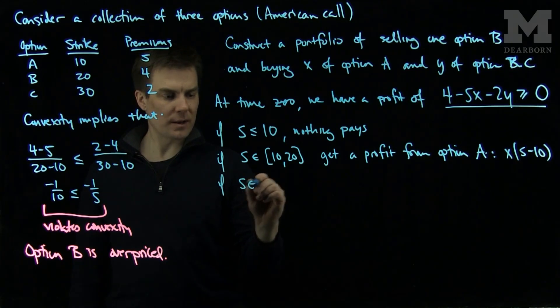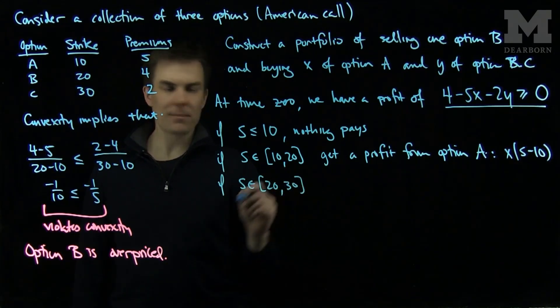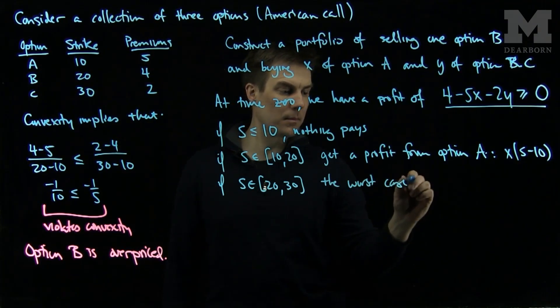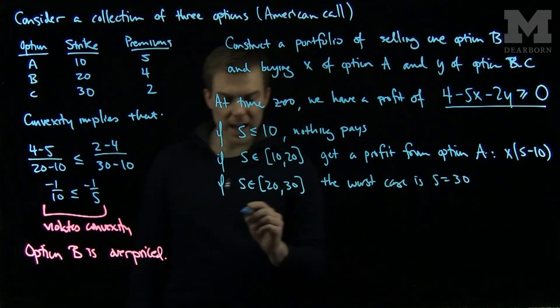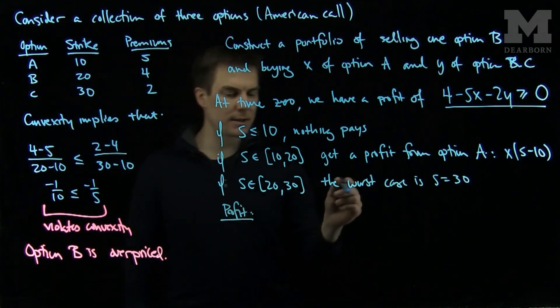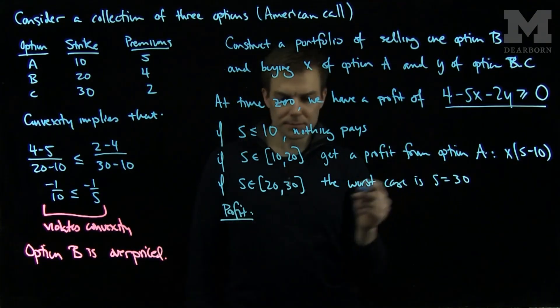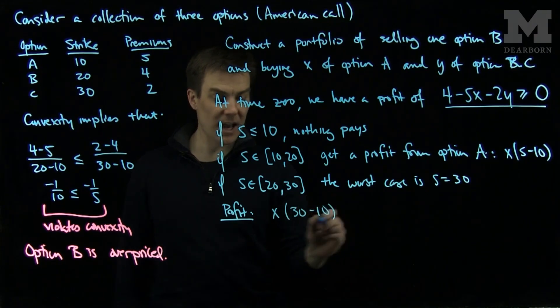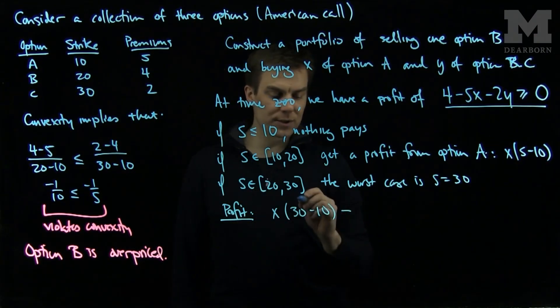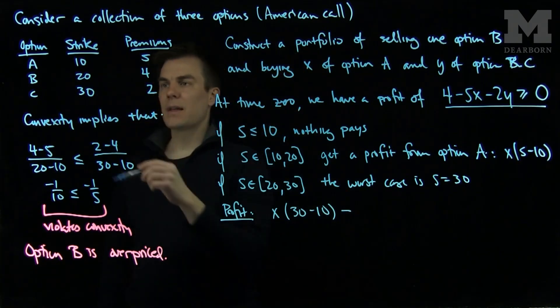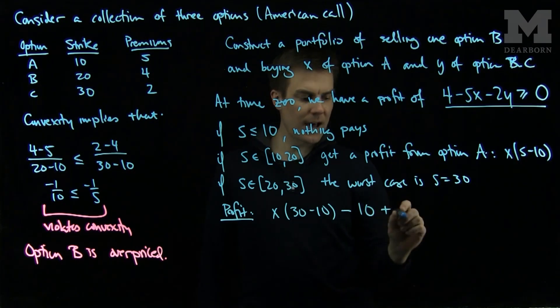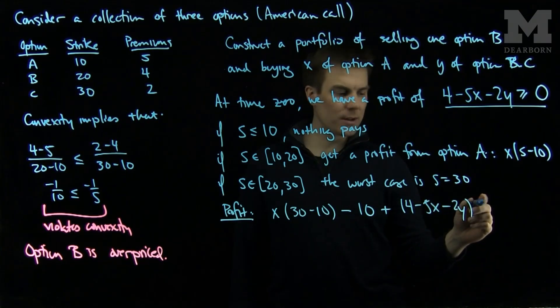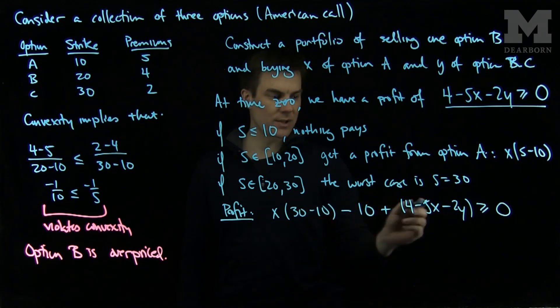If S is between 20 and 30, the absolute worst case scenario is if S equals 30. And what we'll need to construct an arbitrage is our profit in this situation is going to be x times 30 minus 10, that's the profit we get from call option A, minus 10 from the loss on option B, plus my initial gain 4 minus 5x minus 2y. I will need this expression to be bigger than or equal to 0.